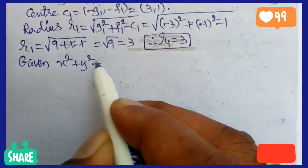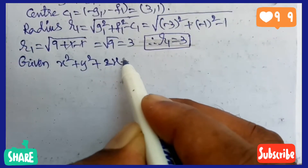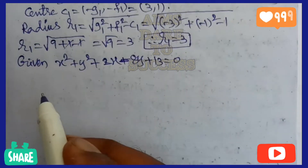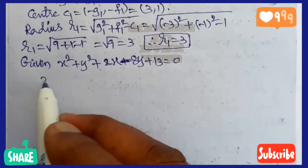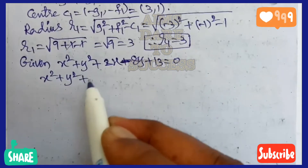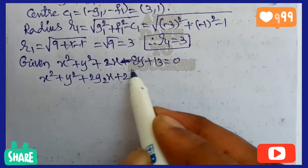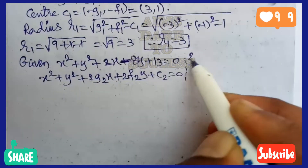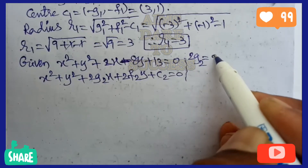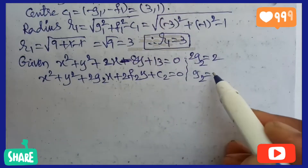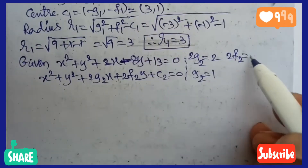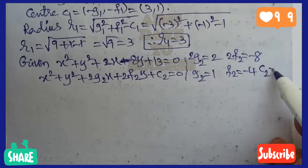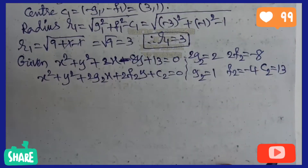The second circle is x² + y² + 2x - 8y + 13 = 0. This is in the form x² + y² + 2g₂x + 2f₂y + c₂ = 0. Comparing x-coefficients: 2g₂ = 2, so g₂ = 1. Comparing y-coefficients: 2f₂ = -8, so f₂ = -4. The constant term c₂ = 13.